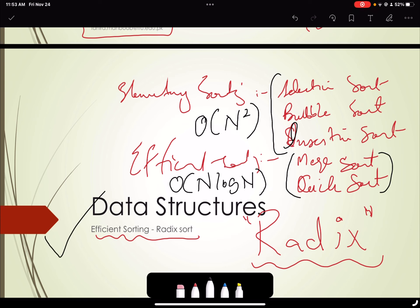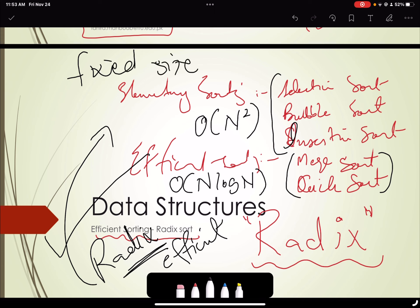So we are coming up with the Radix sort which has a better complexity compared to all these other sorting techniques. So Radix sort is the most efficient among these for fixed size keys.